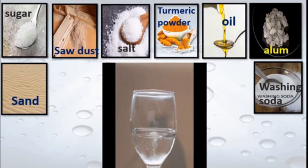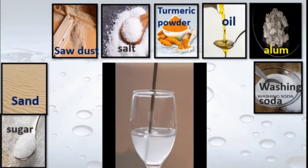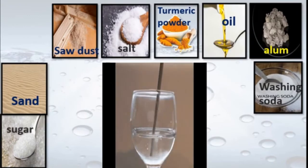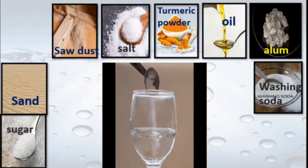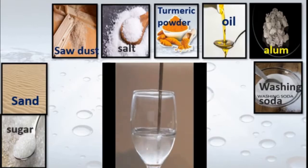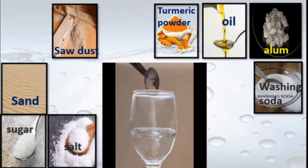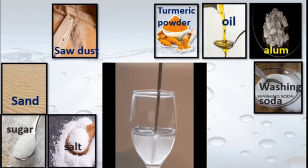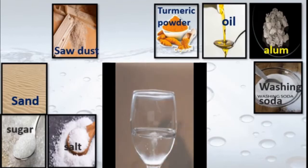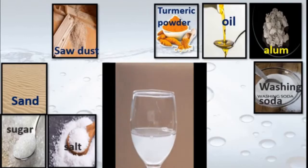Sugar dissolves in water — we know that. Sawdust, when I stir it, remains as it is — it is floating, it does not dissolve. Salt disappears when put in water, meaning it dissolves. Then turmeric powder gives color to the water but does not dissolve — it remains as it is and settles down in the glass.